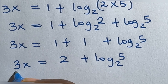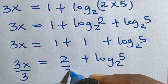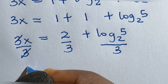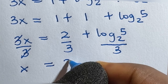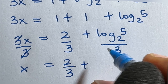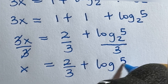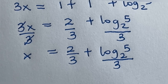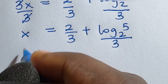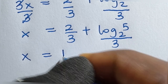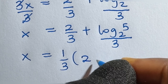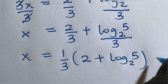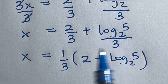Now we can divide through by 3 — divide each term by 3 — so that this becomes x equal to 2 over 3 plus log₂5 over 3. This is our final answer. I can also write this as x equal to one-third times the bracket 2 plus log₂5, which is also accepted as the same thing — I have simply factored out one-third so we can see clearly what the answer is.